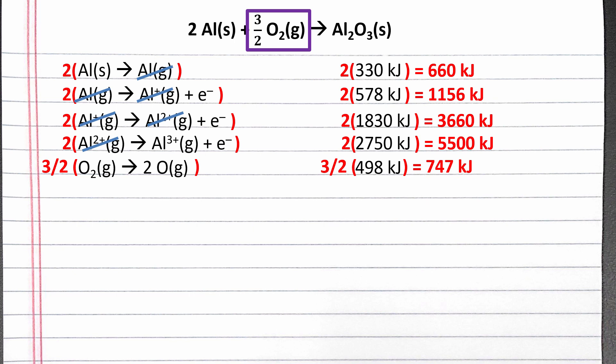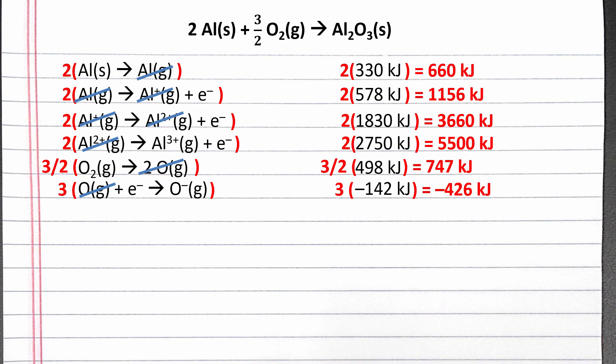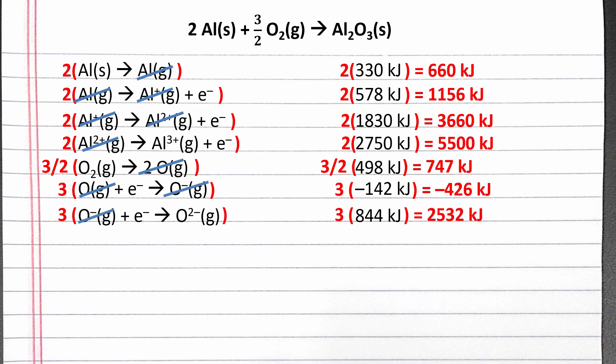The next information we're given is the first electron affinity of oxygen, which is the change in energy when we add an electron to a gaseous oxygen atom to produce O1- gas. From the previous reaction, we've added three oxygen gas atoms as a product since we have three-halves times the coefficient of two, and these three gaseous atoms do not show up in the overall reaction. To cancel them out, we multiply the first electron affinity equation by three. The second electron affinity is the energy change associated with adding an electron to an already negative gaseous oxygen anion, and we multiply this equation by three as well to cancel out the three gaseous oxygen anions.